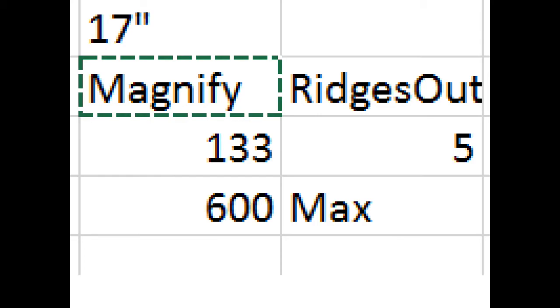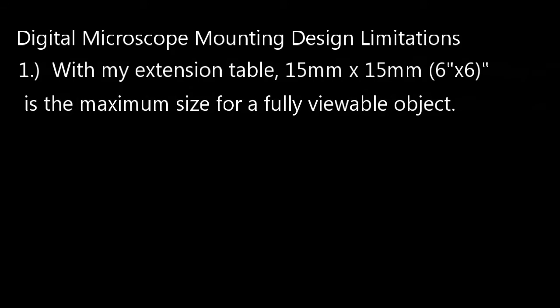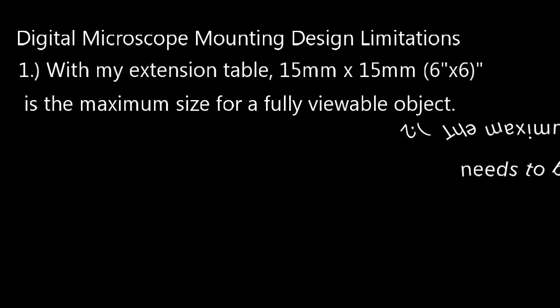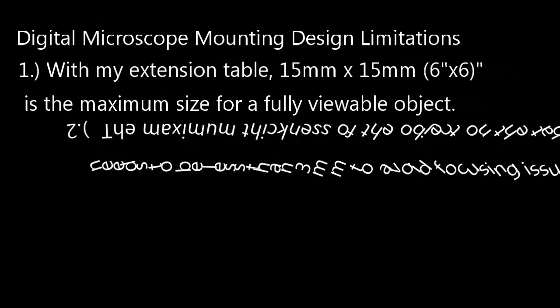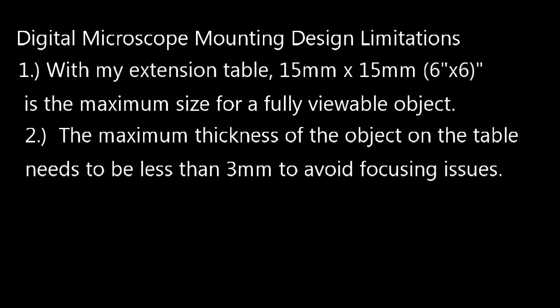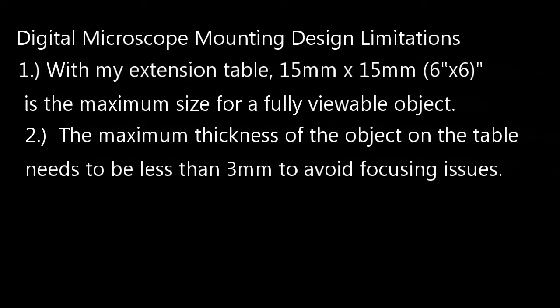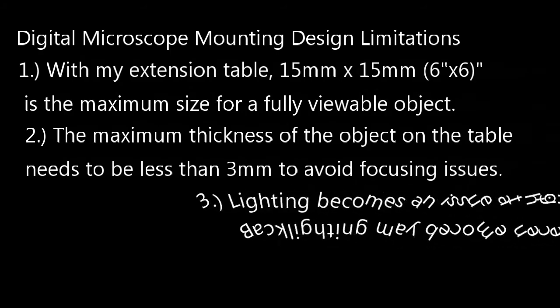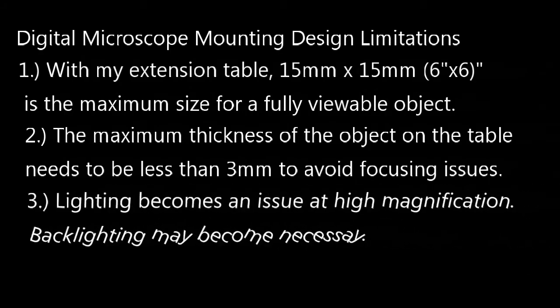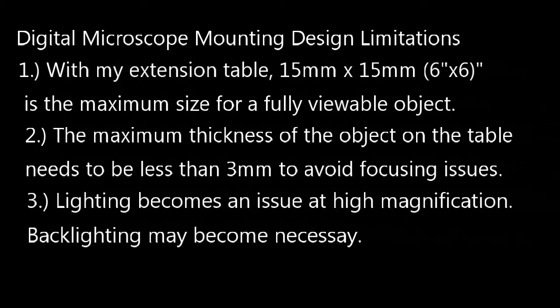So what are the design limitations of this design? The number one limitation is about 15 millimeters square is about all you're going to be able to get on my extended table and still view the entire object you want to look at. Secondly, whatever you're looking at on the microscope needs to be pretty thin. Probably less than 3 millimeters. Something much thicker than that, you run the risk of not being able to focus on it and running off the rack again. Third, believe it or not, lighting becomes an issue. It's just that the lights cannot properly illuminate the target because you're getting in so close and trying to focus in so tight, the lights actually shine around the target. Backlighting may be required for higher magnifications.